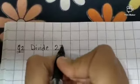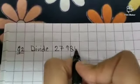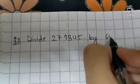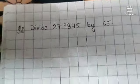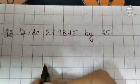Now note down the second question. Question number 2. Divide 279845 by 65. Okay, let's solve this.